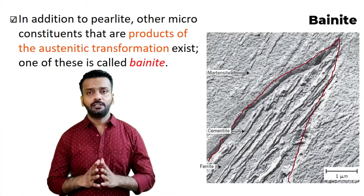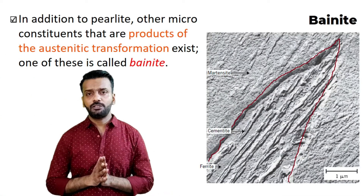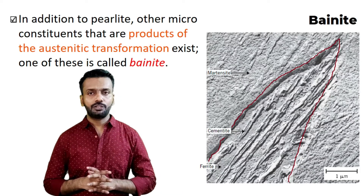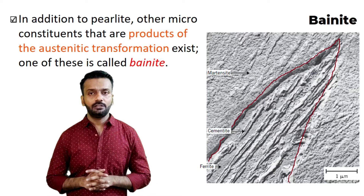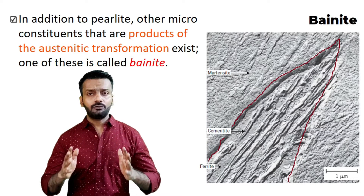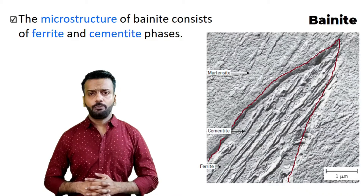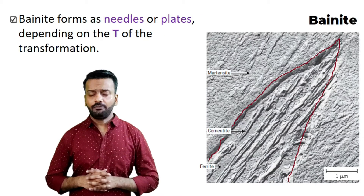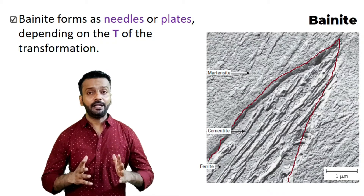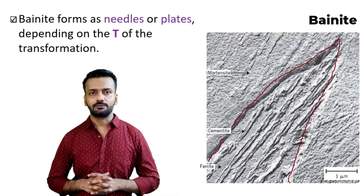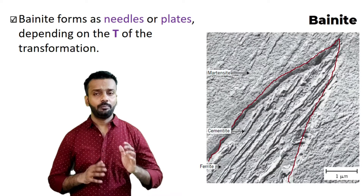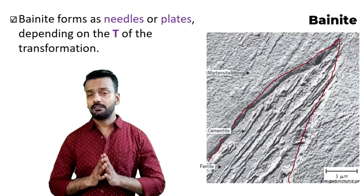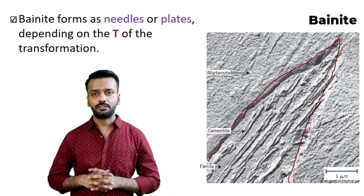In an earlier video, we have seen that during the austenitic transformation, we get pearlite. But other than pearlite, there are also some other micro constituents that we get during this transformation, and one of that is bainite. The microstructure of bainite consists of ferrite and cementite phase. Bainite will form like needles or plates depending on the temperature of the transformation. Here in this image, you will see that bainite is in the form of needles and it is looking very sharp, and that is how it resembles and we know that the structure we got is bainite structure.